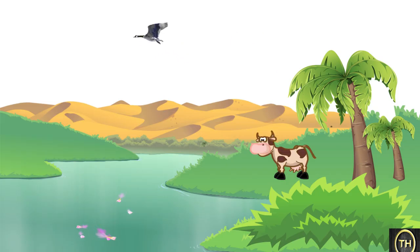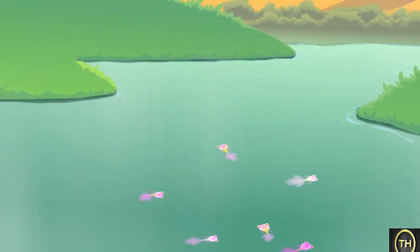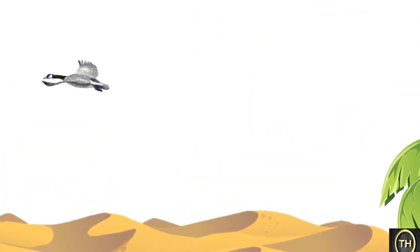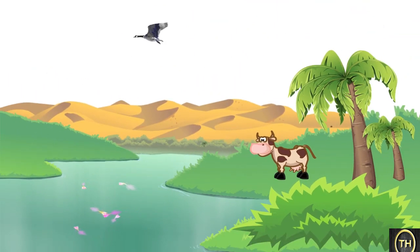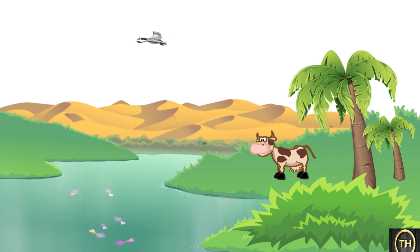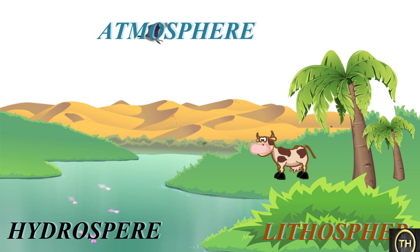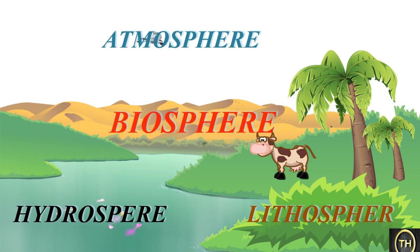You can see that some things in the picture are in water, some on land, and some in the sky, i.e., in the air. Thus, all things on the earth are associated with air, water and land. Air, water and land are called the earth's atmosphere, hydrosphere and lithosphere. All different living things occupy these three spheres of the earth, and together they are called the biosphere.